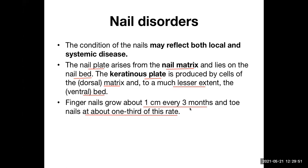Why do we need to examine the nail? The condition of the nail may reflect both local and systemic disease. Local disease includes fungal infections and paronychia, while systemic diseases include infective endocarditis, bronchogenic carcinoma, cyanotic congenital heart disease, and inflammatory bowel disease. Nail examination is an important part of general patient examination.